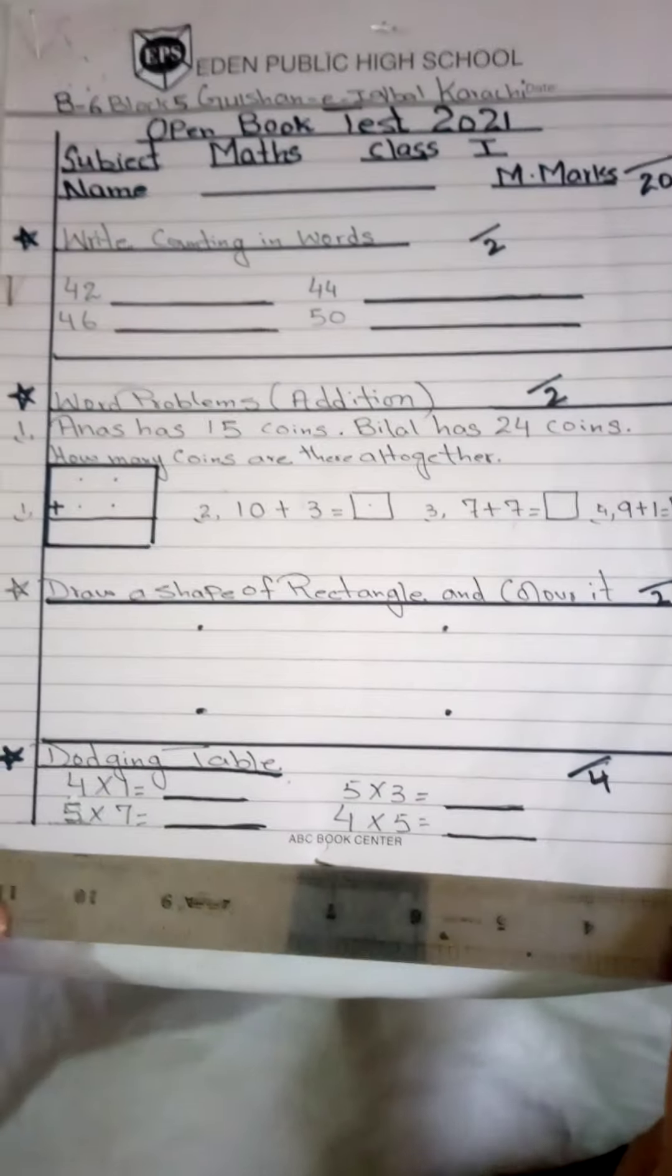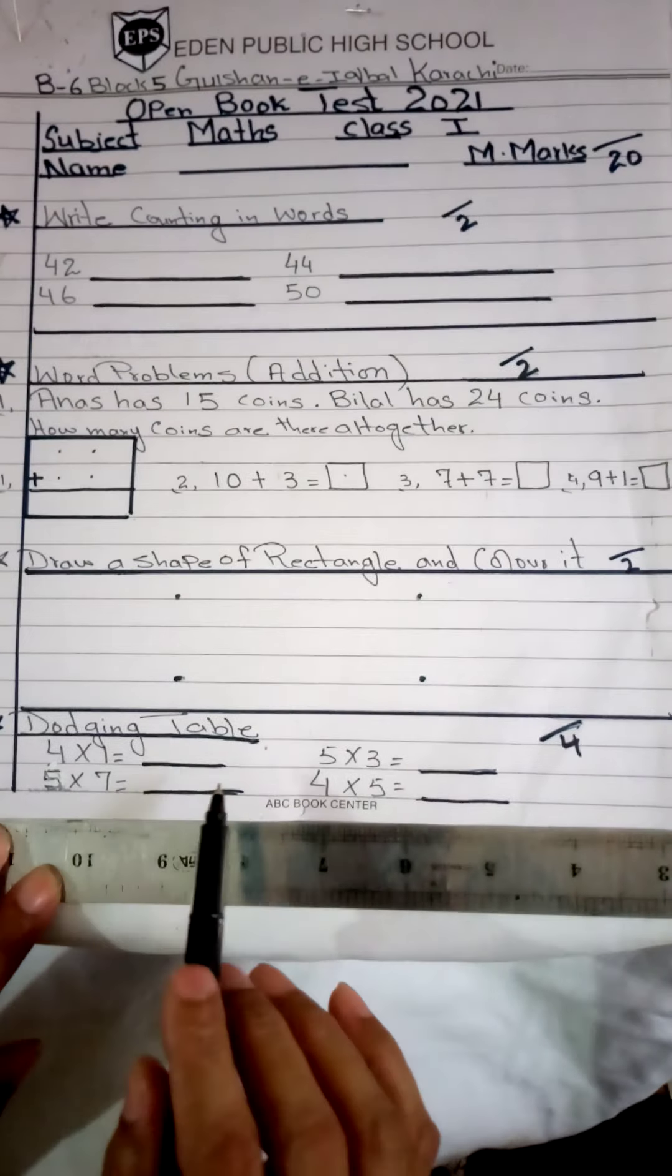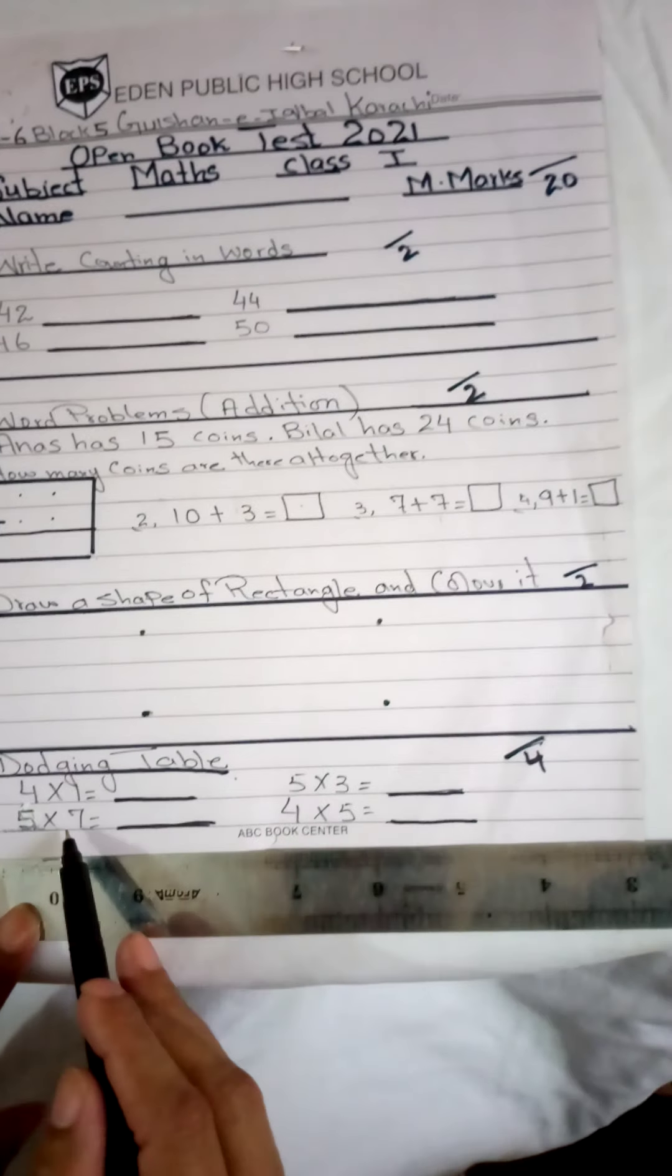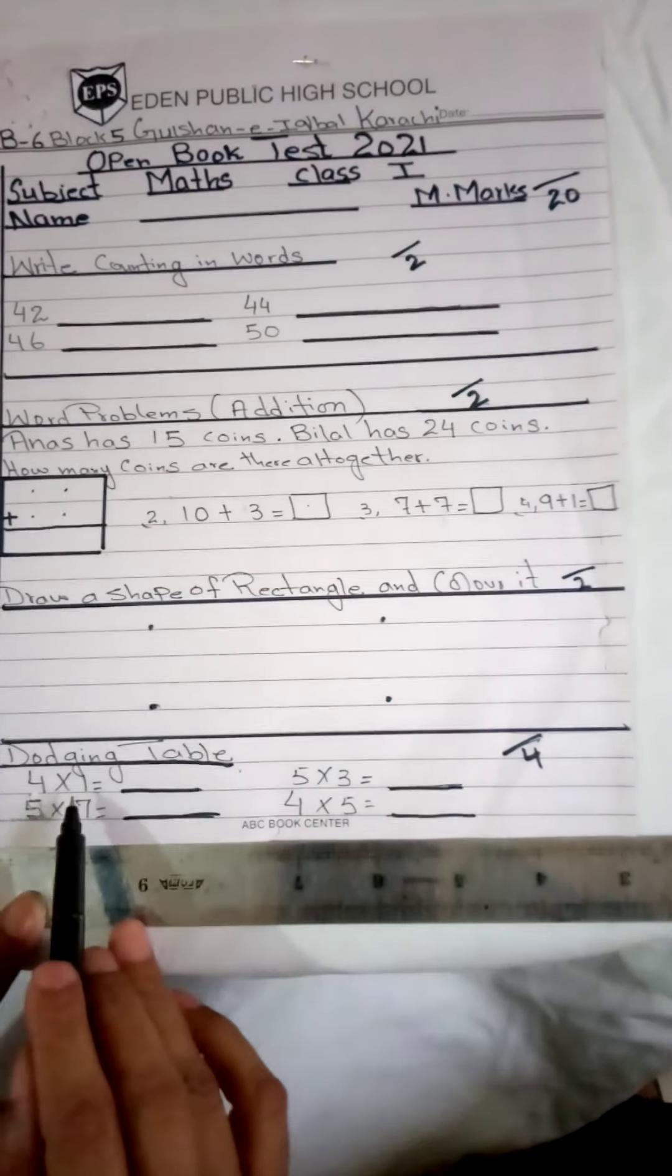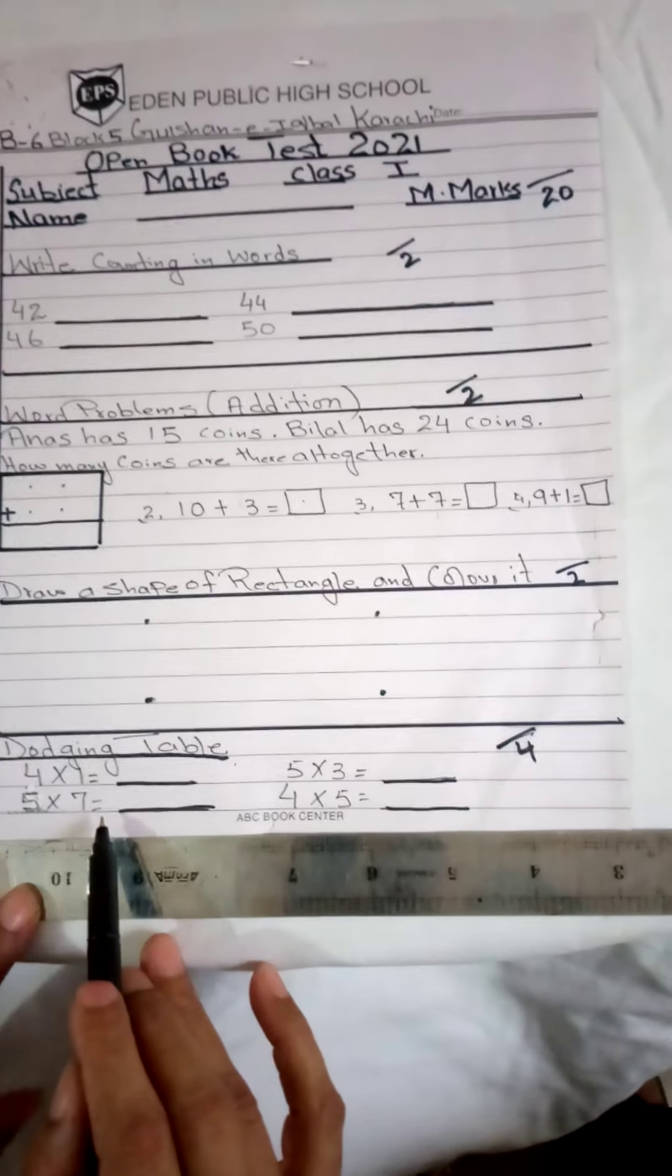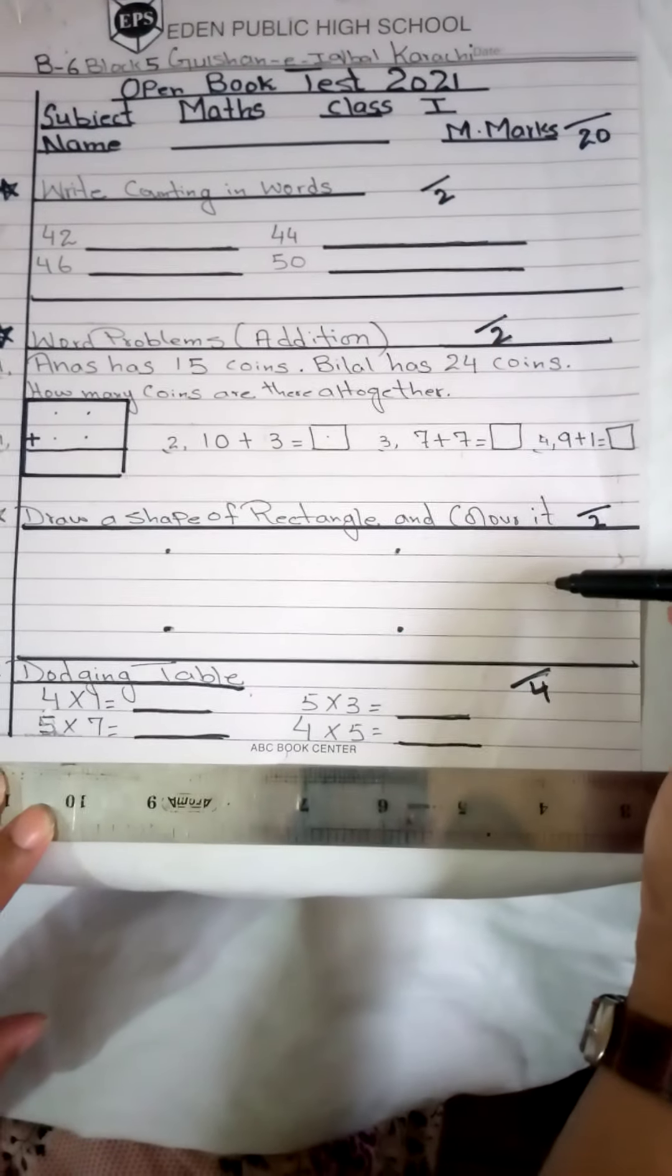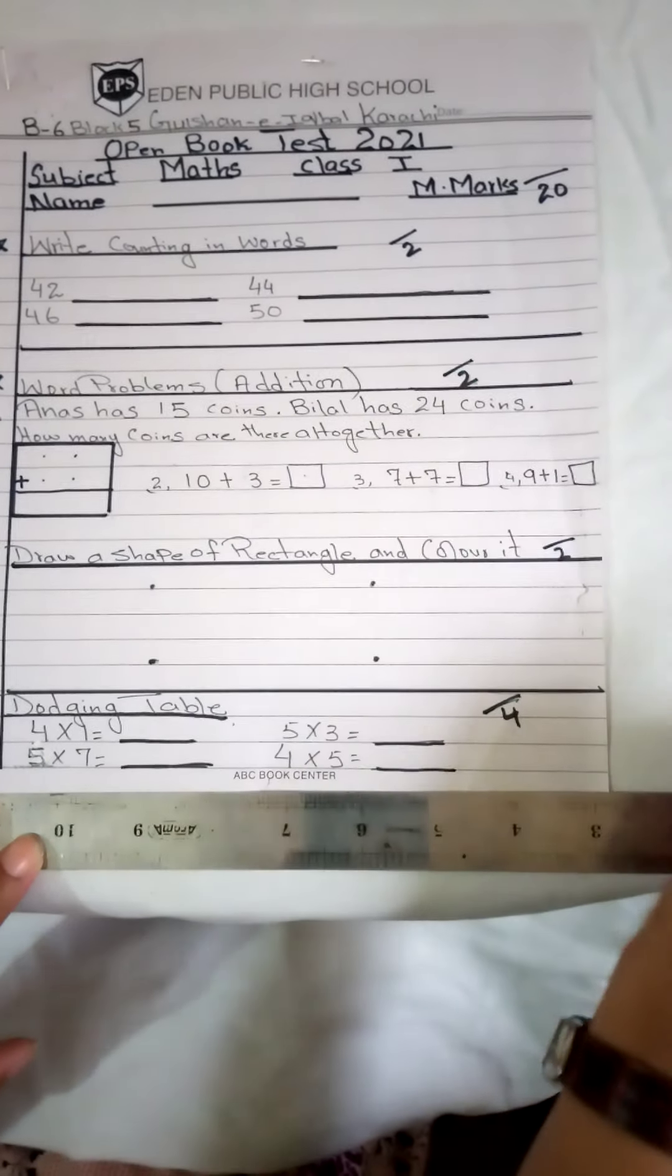And the last work is table dodging. The teacher has given you tables of 4 and 5. Now I have given you table dodging. If you have read the whole table, if you have not memorized, you will write the answer. 4 ones are, 5 threes are, 5 sevens are, 4 fives are. Okay students, this is the first page. Now I will explain your second paper.